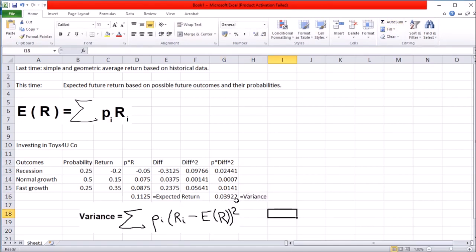So generally the formula for the variance is shown here. That's the sum of the product of the probabilities of different outcomes times the square of the difference between the returns in those outcomes and expected return or the mean.